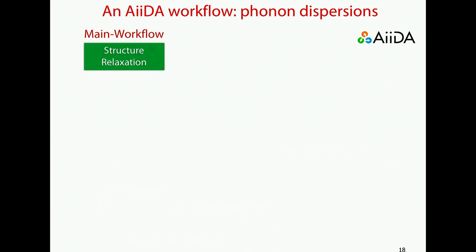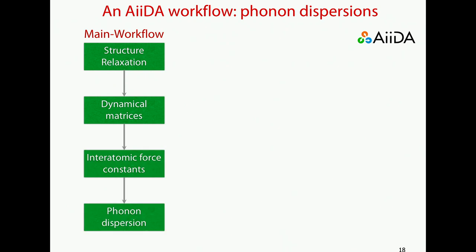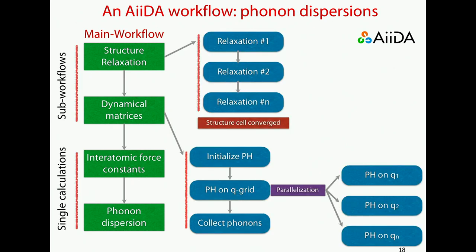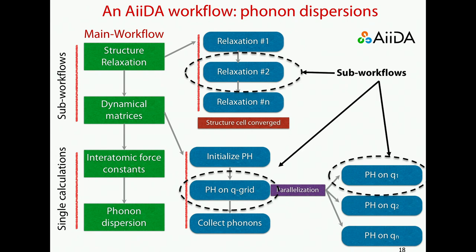Let me show you an example workflow: the phonon dispersion workflow. It starts from a structure, computes the dynamical matrices, and in the end gives the phonon dispersion. It contains many sub-workflows: structural relaxation going through several iterations until convergence, dynamical matrix computation for each q-point using the ph code of Quantum ESPRESSO. All these are low-level workflows that handle restart management on a cluster — if a calculation fails for an external reason you just relaunch it, or if CPU time was reached you continue it, with some small logic to adjust parameters to make it work.